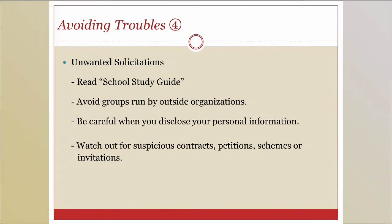Next, unwanted solicitations. Waseda University is a large university and unfortunately some student clubs are reportedly run by outside organizations such as religious cults and radical groups. For example, some people may approach you as the student government of the School of Social Sciences, known as Jichikai, but this association does not exist. Don't give away your personal information easily. If you are joining a student club, check their activities first, ask senior students or school office staff. If you feel something wrong is going on, or if you have been forced to pay an unreasonable amount of money or sign a contract, please let us know.